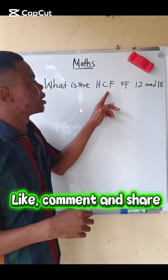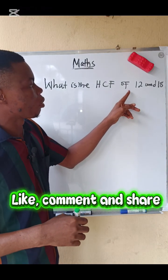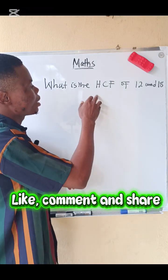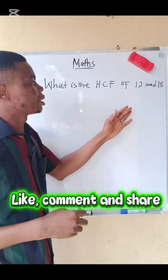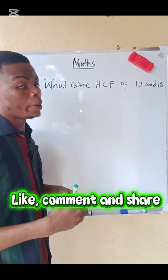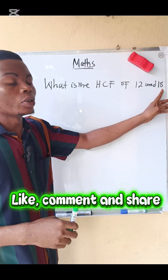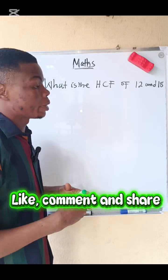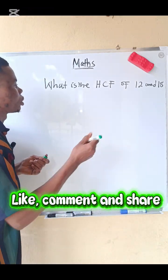What is the highest common factor of 12 and 18? Highest common factor means those numbers that 12 can divide without a remainder, and the same thing with 18 — those numbers that 18 can divide without a remainder. So let's see a solution.